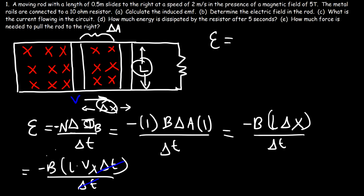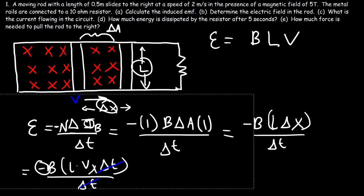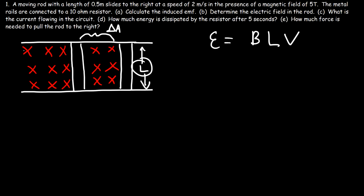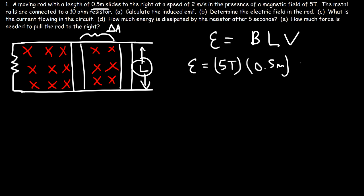So the induced EMF, if you don't worry about the negative sign, gives us this equation: it's the magnetic field times the length of the rod times the speed at which the rod is moving. I need to modify this circuit — put the resistor on this side so there's no short circuit and there's only one path for the current to flow. So the induced EMF is the magnetic field strength of 5 tesla times the length 0.5 meters times the speed 2 meters per second. A half times 2 is 1, and 1 times 5 is 5.